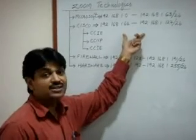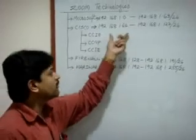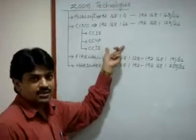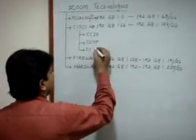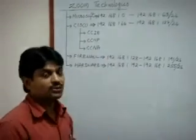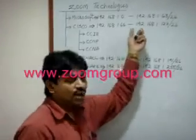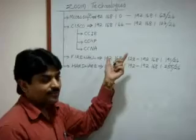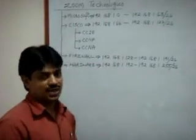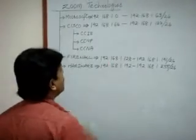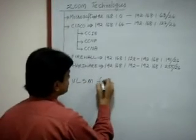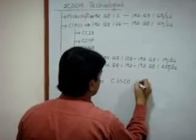Now in the Cisco department we also have sub-departments: CCIE, CCNP, and CCNA — three sub-departments. What I want to do is restrict these three departments so they cannot communicate with each other. To do this, we can take this subnet range further and divide it using VLSM — Variable Length Subnet Mask. So I am doing VLSM for the Cisco department.